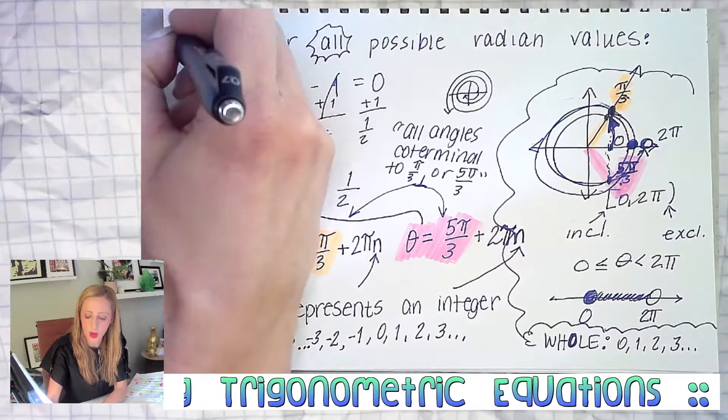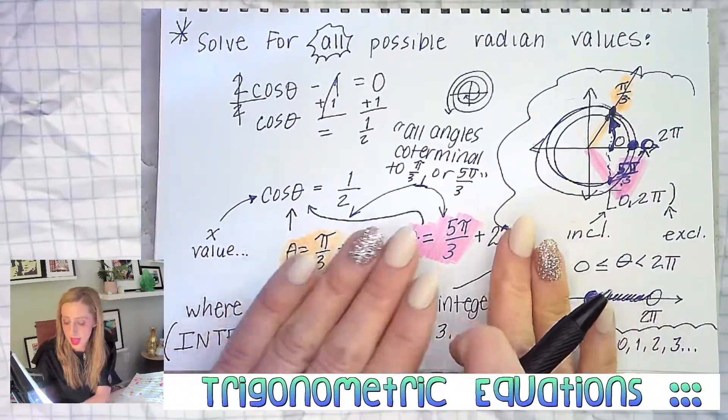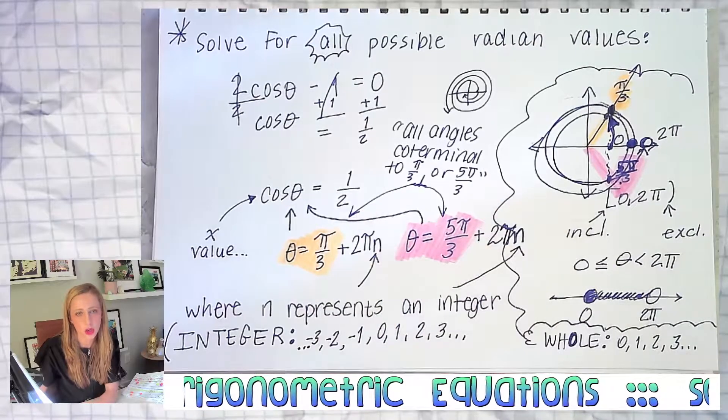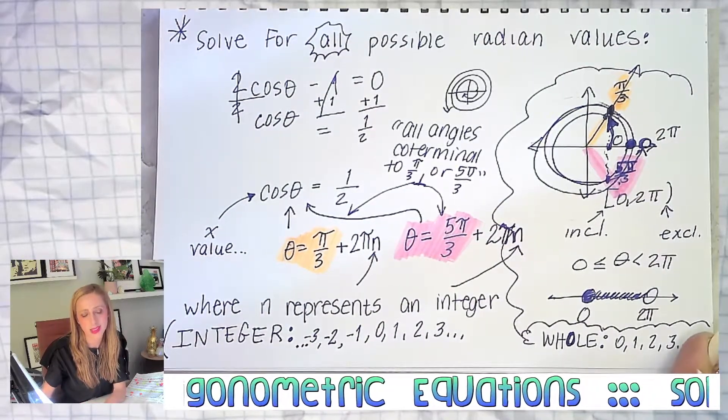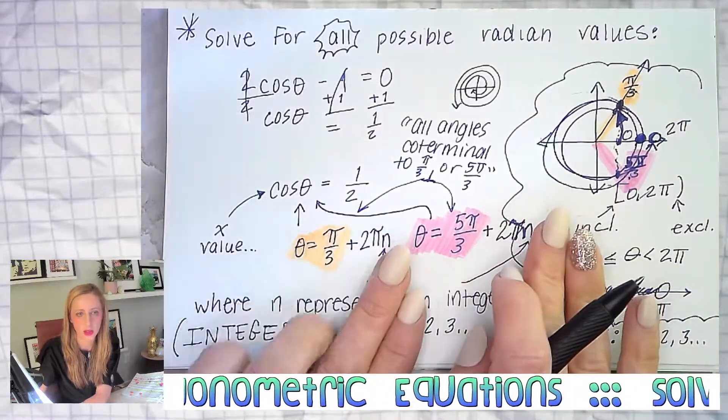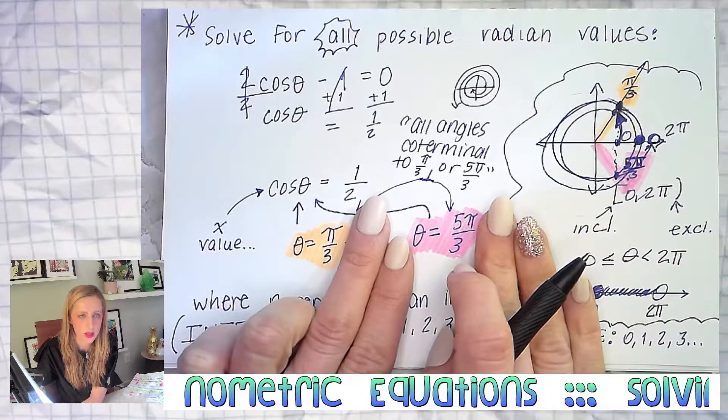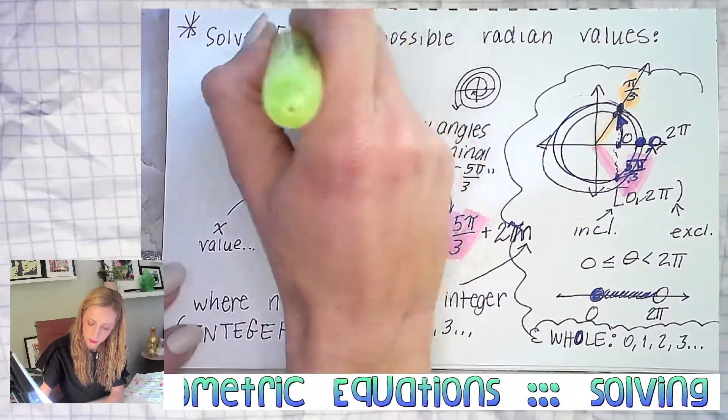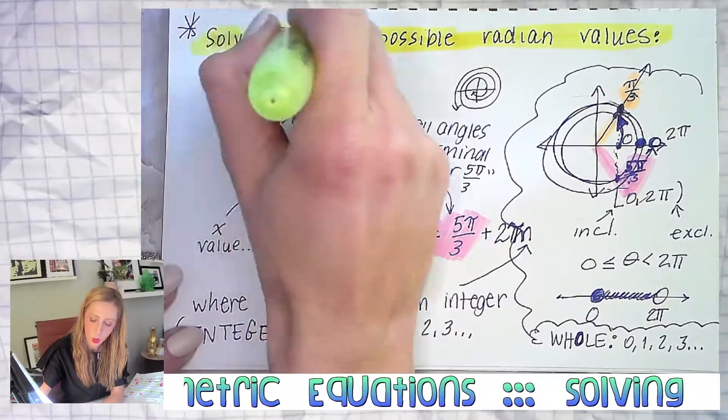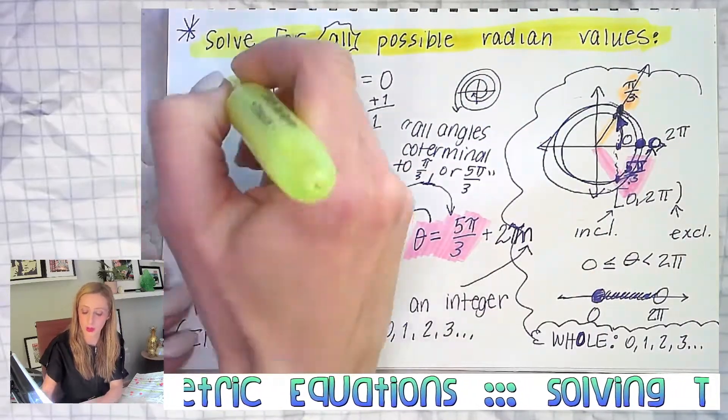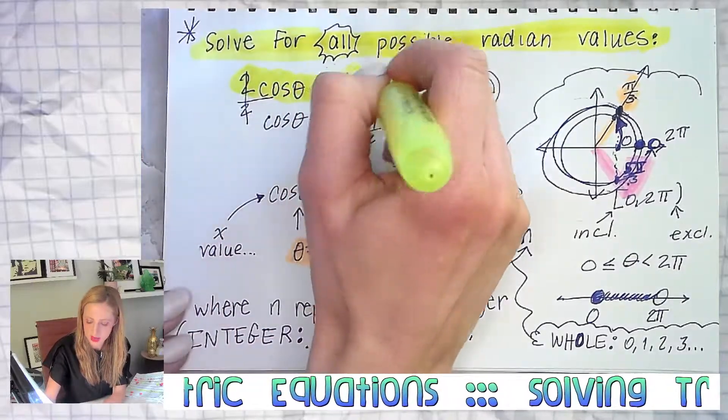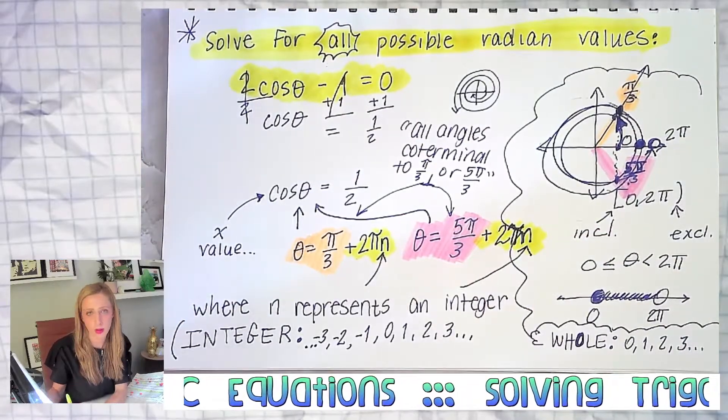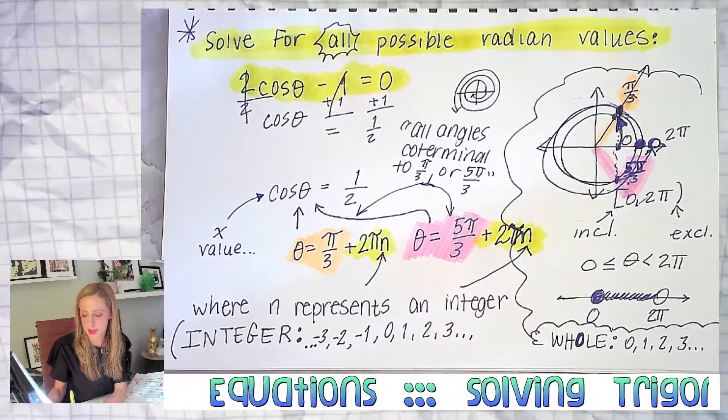This is what's to come. We're not quite going to write these answers yet today - we're going to stay focused on just writing the answers between zero and two pi. But I just wanted to show you a little early this is what they mean when they say all answers. When it says all possible solutions, or if they don't specify between zero and two pi, it's really the same thing - that's when we do this solution here with plus two pi n.